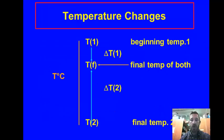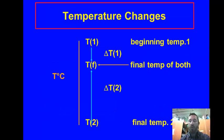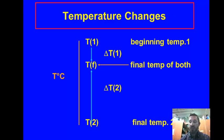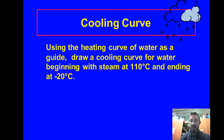Remember, temperature is what we call a state function — it matters where you start and where you finish. So we have different temperature changes on the graph: a temperature change from ice to melting, and from a liquid to a vapor.